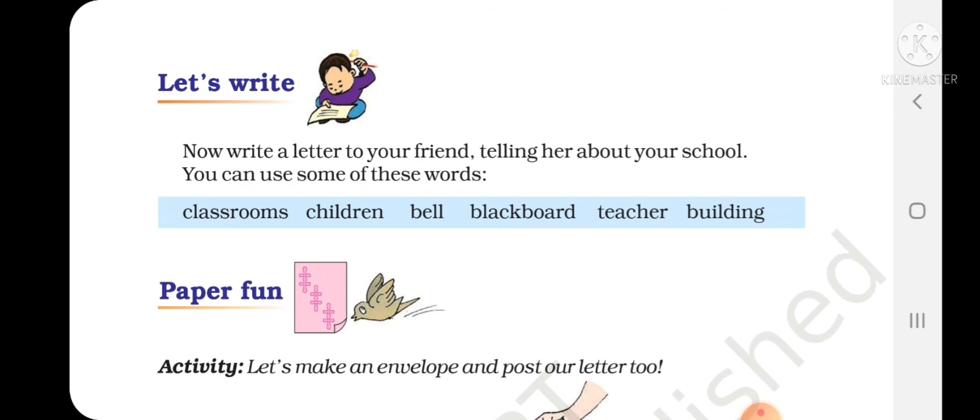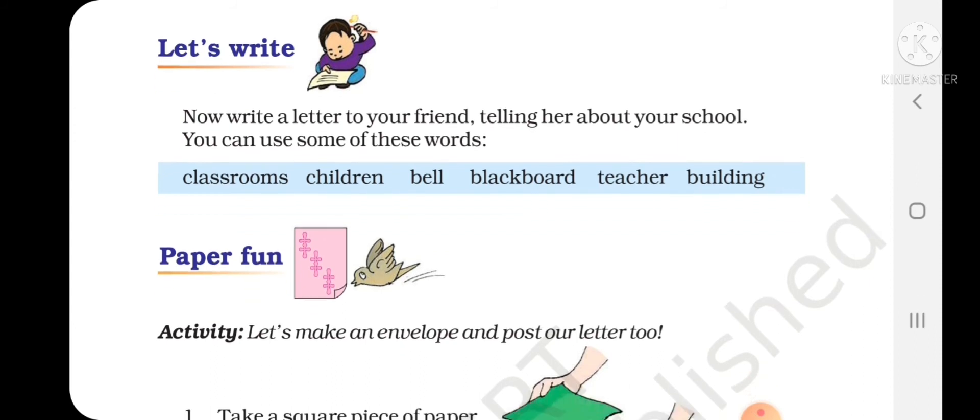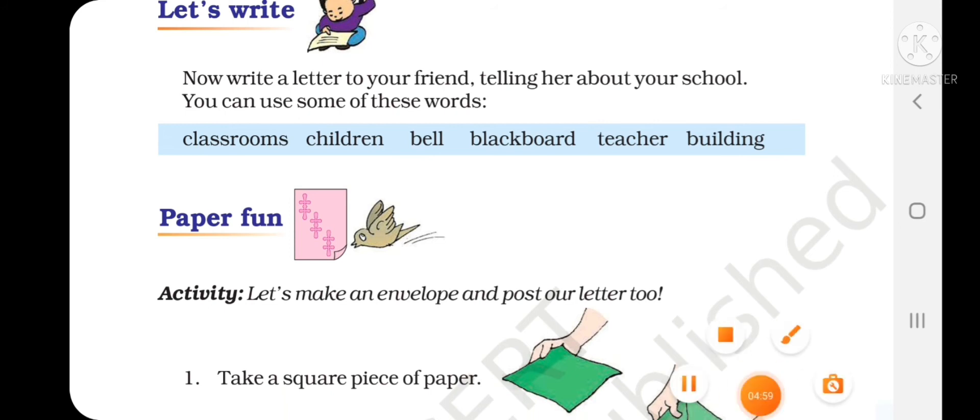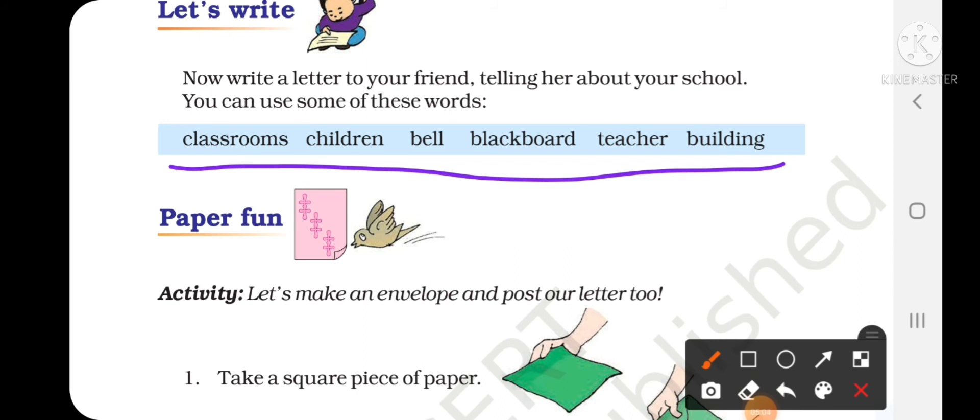Now let's write. Now write a letter to your friend telling her about your school. You can use some of these words: classrooms, children, bell, blackboard, teacher, building. You can write: Hope you are doing well. I have taken admission in a new school. I have so much to share about my school with you. It is a huge building of white color. My school has 50 classrooms and they all have a green board to write on. Teachers are very helpful also. They love the students equally.